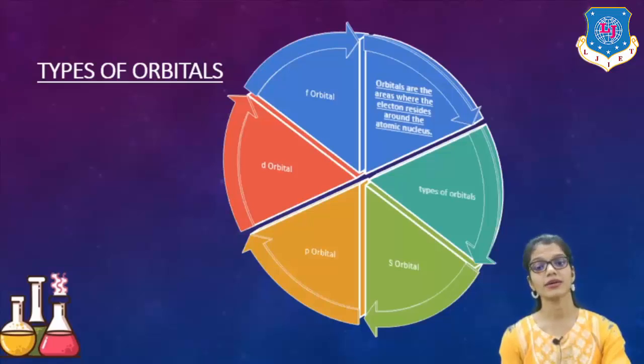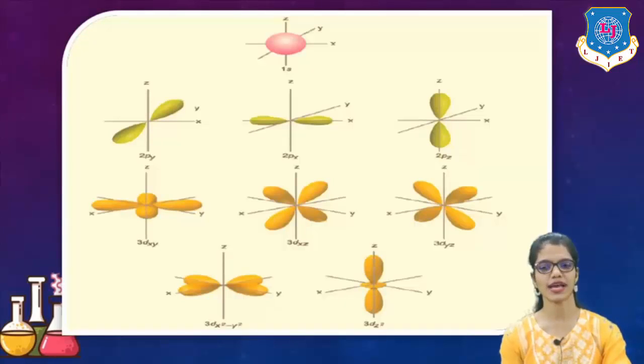After that, P orbital comes into existence. Then D. And the last one is F. F is considered as at the highest distance from the atomic nucleus, or it is farthest from the atomic nucleus. Now let's see how they look actually.